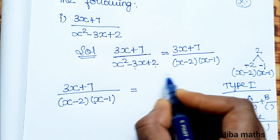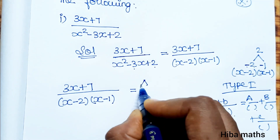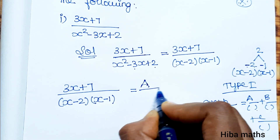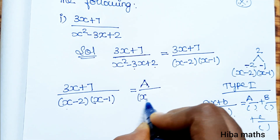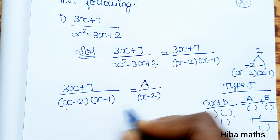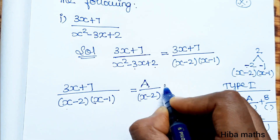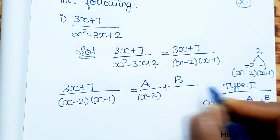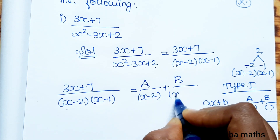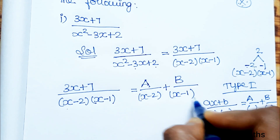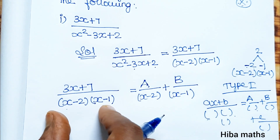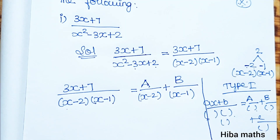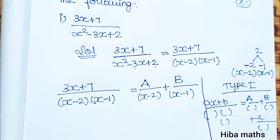Since we have two factors, we write: A divided by (x minus 2) plus B divided by (x minus 1). This is the first step of the partial fraction setup.